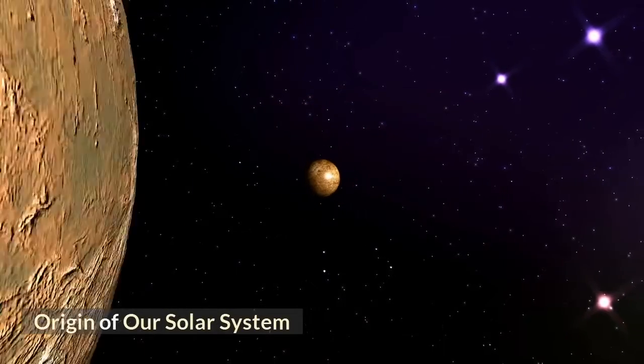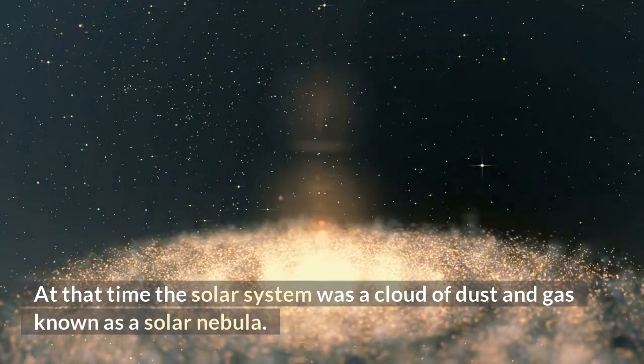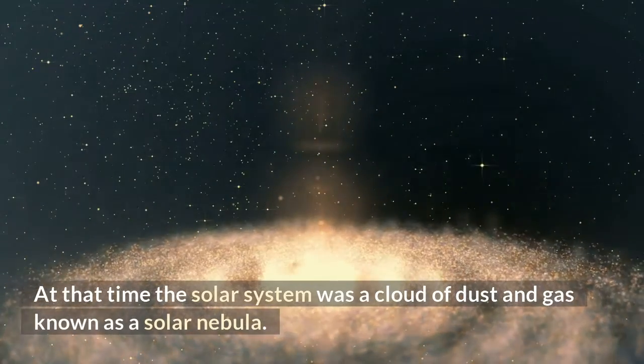Origin of our solar system. Approximately 4.6 billion years ago the solar system was formed. At that time the solar system was a cloud of dust and gas known as a solar nebula.